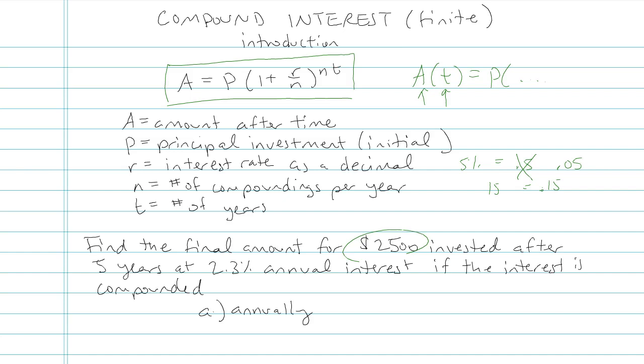This $2,500 is the initial amount. That's how much you put in the beginning. So that's going to be A for all of our different problems. Then the 5 years, that's a T amount. 2.3% annual interest, that's going to tell us that R equals .023, careful with your decimal.